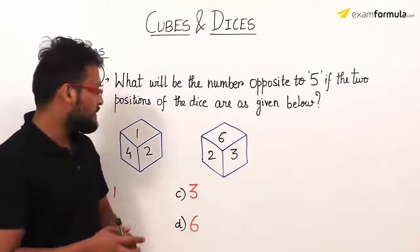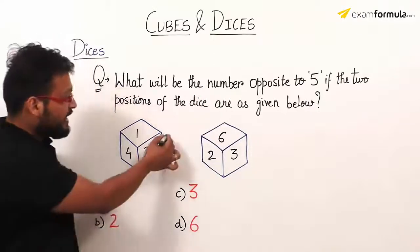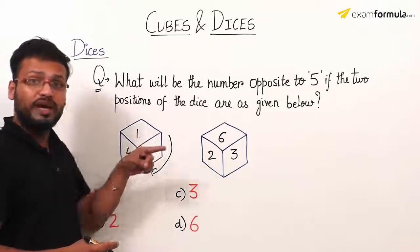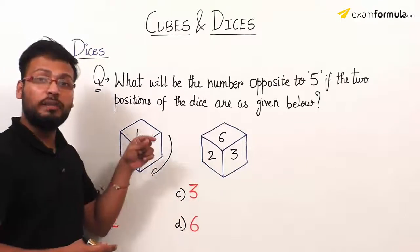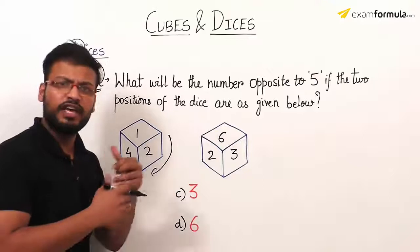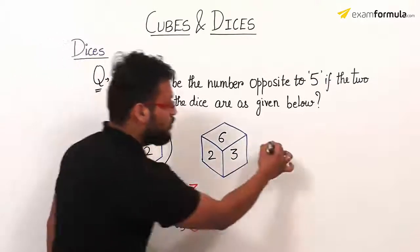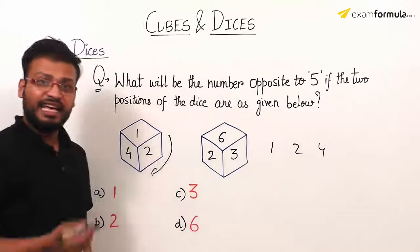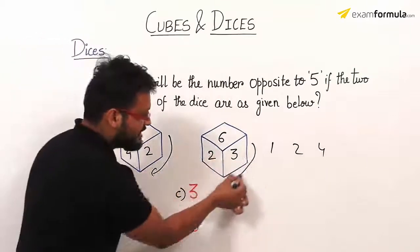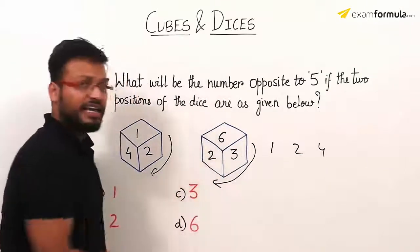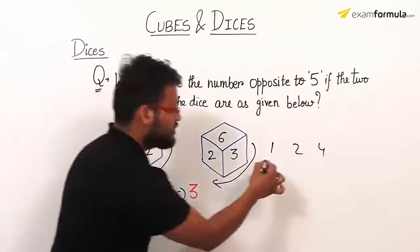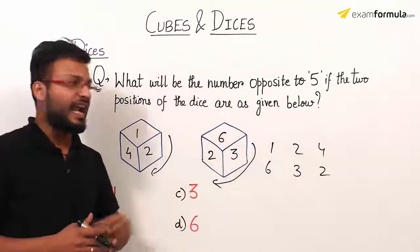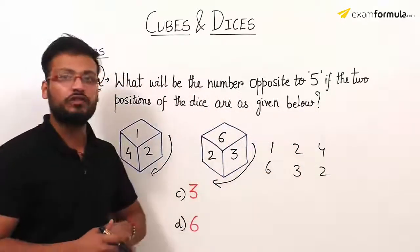Following the same trick: in the first figure, numbers occurring in the clockwise sense are 1, 2, 4 — write them horizontally. For the next figure, numbers in the clockwise sense are 6, 3, 2 — write them horizontally as 6, 3, 2. That completes the first step of representing the numbers in two rows.